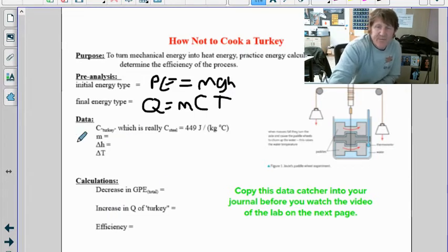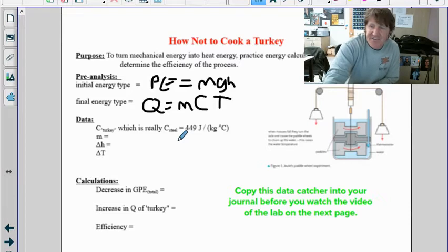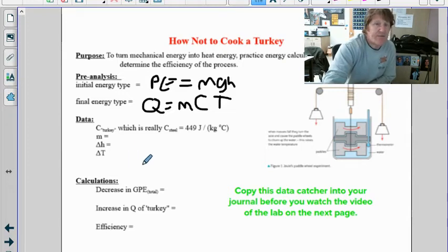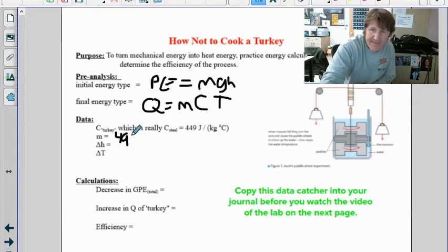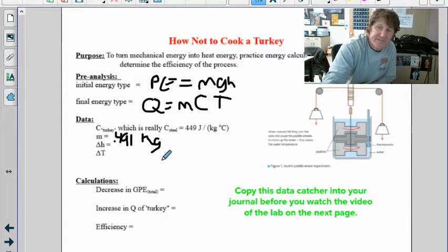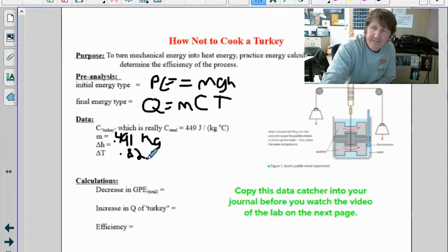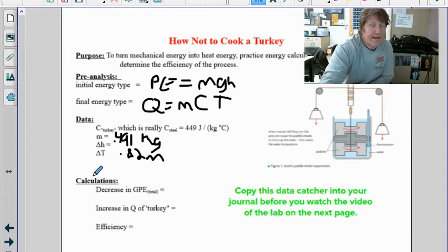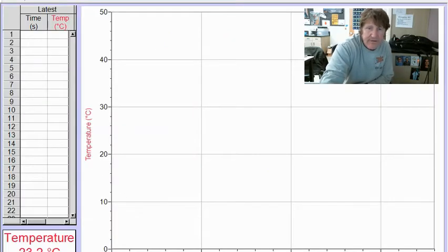So we're going to fill in this information here now in our data. The specific heat for steel is actually much lower than it is for water, so only 449 joules per kilogram degree Celsius. The mass of the amount of steel in our tube is 491 grams, but that needs to be in kilograms, so that's 0.491 kilograms. Our height or our change in height I just said was 82 centimeters or 0.82 meters. And then our change in temperature we're going to have to figure out. Our starting temperature, if I come back over here, is 23.2 degrees Celsius.